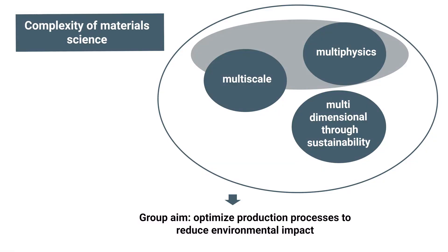Material science in general has its own complexity — it is a multi-scale and multi-physics problem. And with sustainability, you make it multi-dimensional as well. Here in this research group, we use different methods and computational tools to tackle these challenges and design materials or optimize the production processes to reduce the environmental impact and improve sustainability.